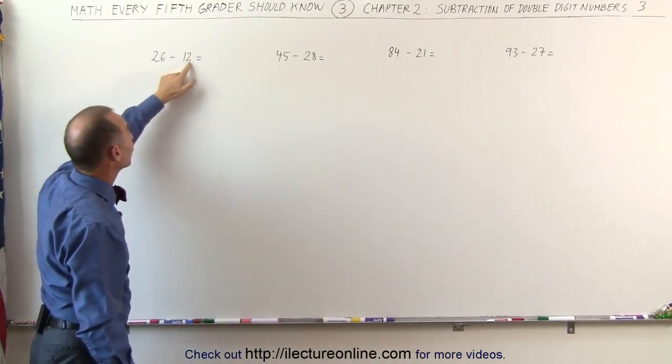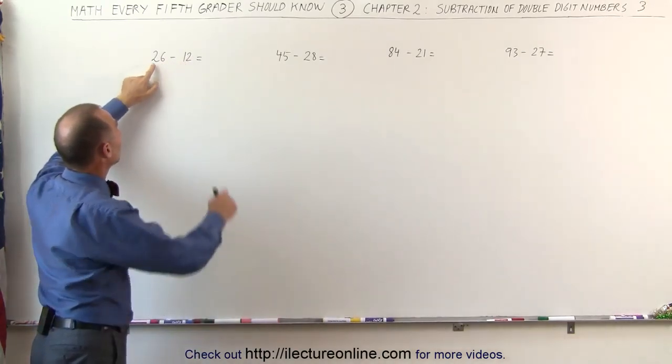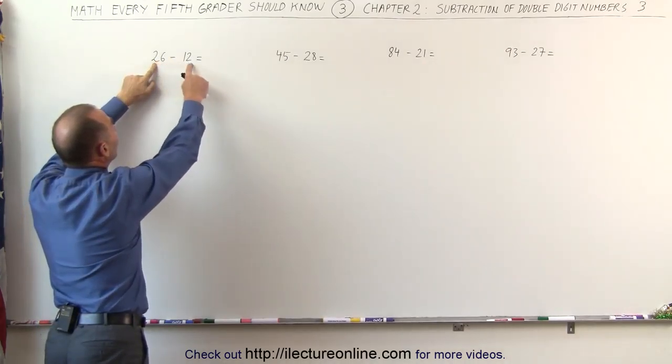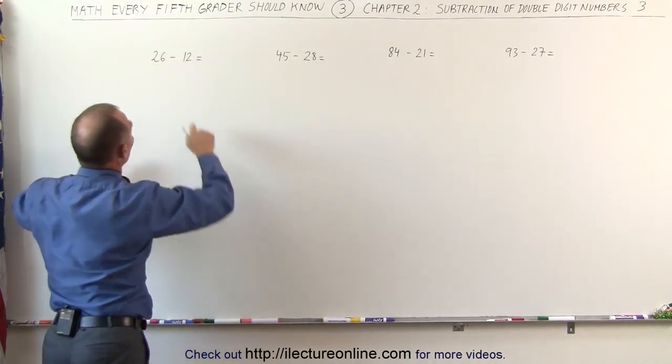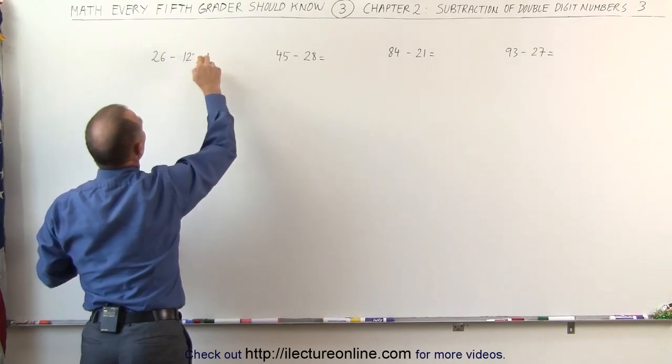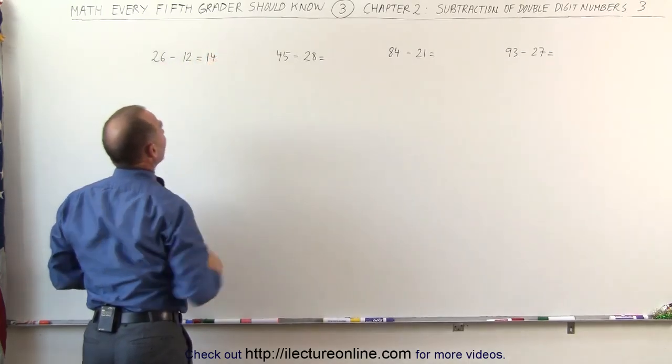Start with this number. If it's smaller than that and this number is smaller than that, you simply subtract the 1 from the 2 and the 2 from the 6. 1 subtract from 2 gives me 1, 2 subtract from 6 gives me 4 and the answer is 14.